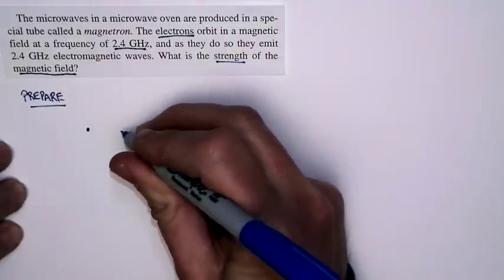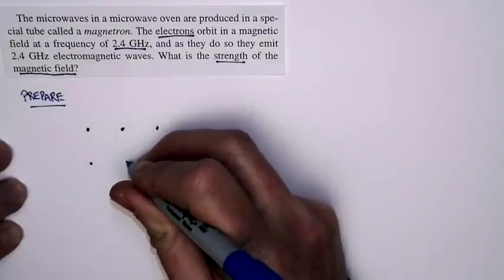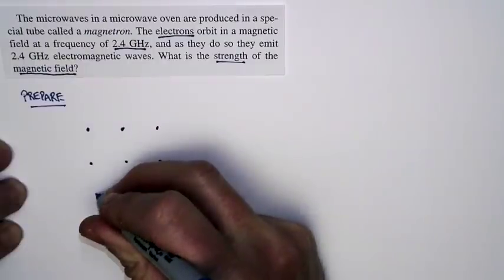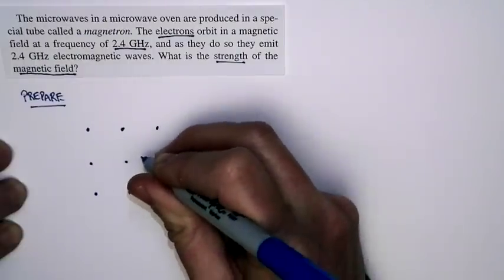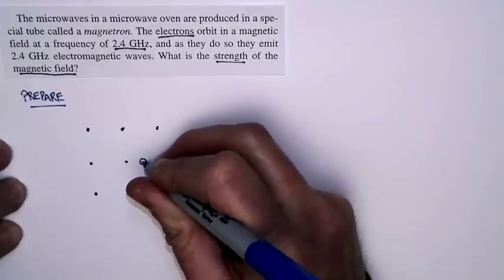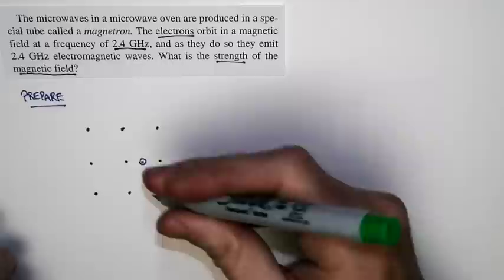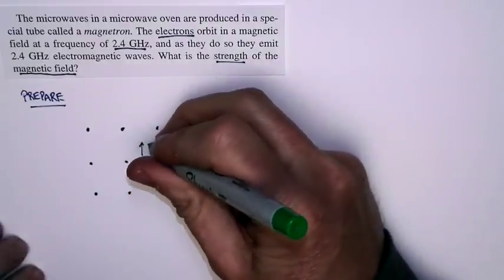Well, let's do some preparation to start. Suppose we have a region of uniform magnetic field, like so. And we've got a negatively charged particle. We have an electron. And it's moving at a certain speed in this region of magnetic field. It's moving at a speed v.